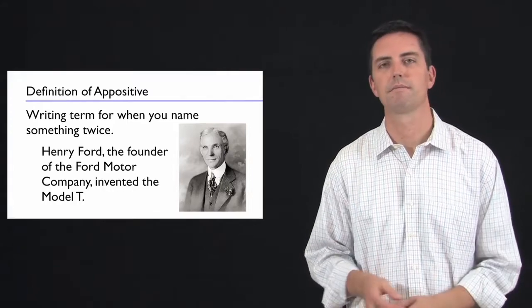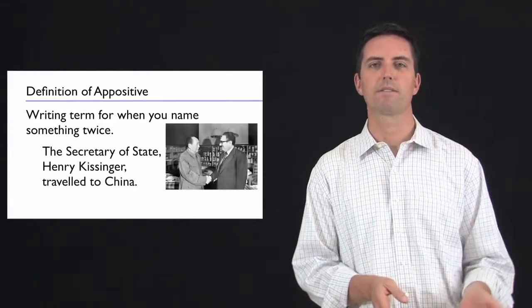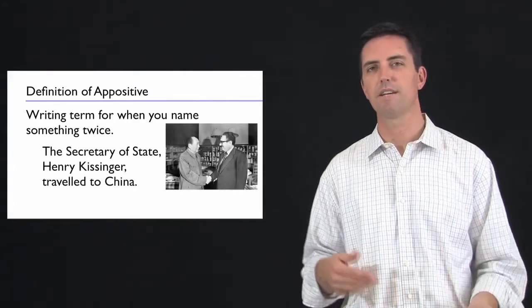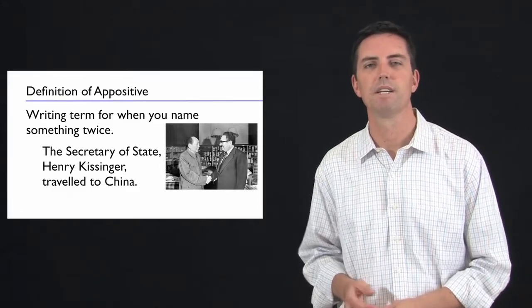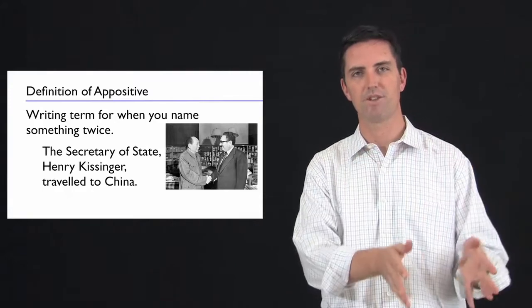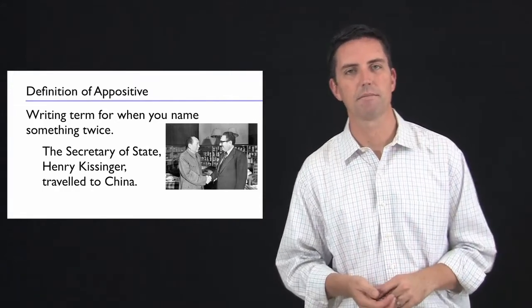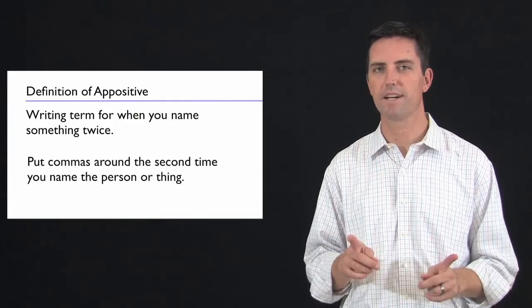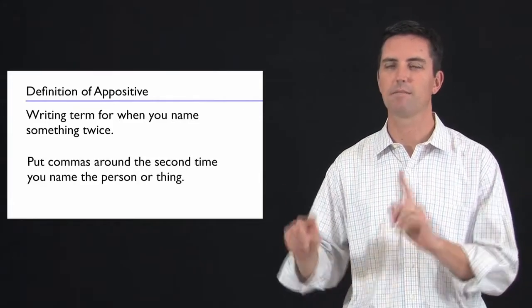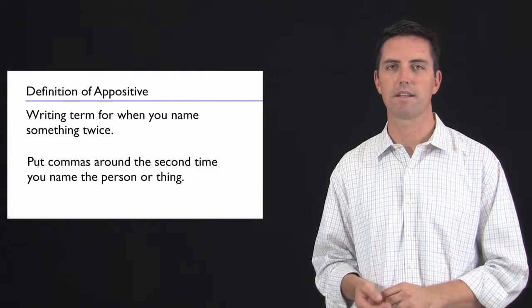You could also say, the Secretary of State, comma, Henry Kissinger, comma, traveled to China. In that one, I named him by job and then by name. But both times, I'm referring to someone twice. And the second time is the one I put commas around.